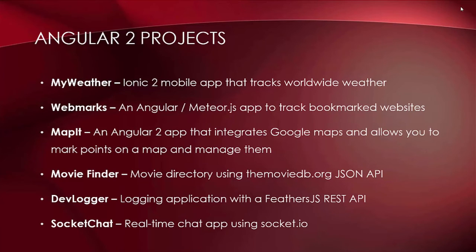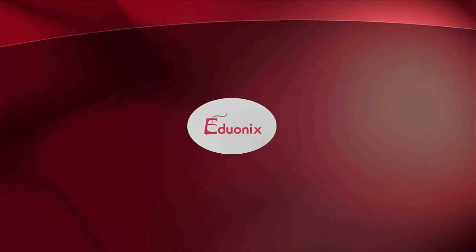My Weather will be another Ionic 2 mobile app that tracks worldwide weather. Web Marks will be an application using both Angular and Meteor.js to track bookmarked websites. Map It will be an Angular 2 app integrating Google Maps to mark and manage points on a map. Movie Finder will be a movie directory using the MovieDB.org JSON API. DevLogger will be a simple logging application using Feathers.js and a RESTful API. And Socket Chat will be a real-time chat application using Socket.io. That's what's in store — quite a bit to cover, so I'll see you in the next video.